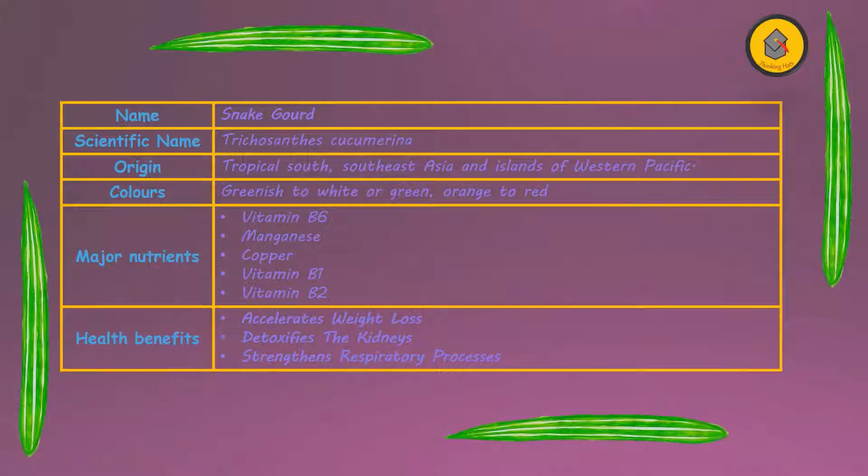It comes in the colors of greenish to white or green or orange to red. The major nutrients it supplies are vitamin B6, manganese, copper, vitamin B1, and vitamin B2. The health benefits it has are: it accelerates weight loss, it detoxifies the kidneys, and it strengthens the respiratory process.